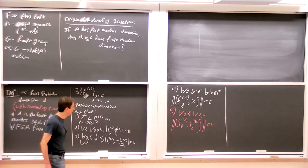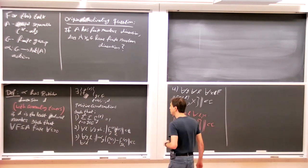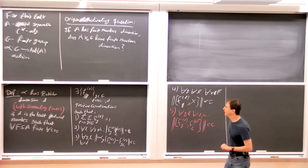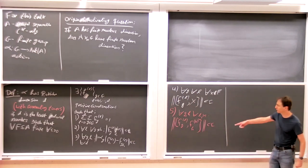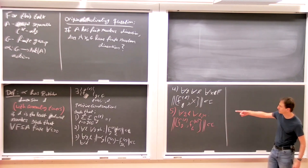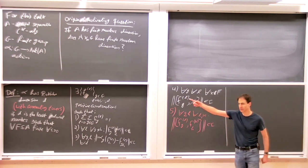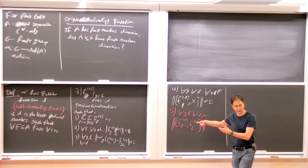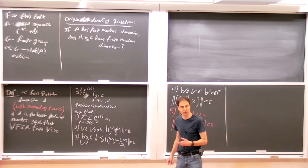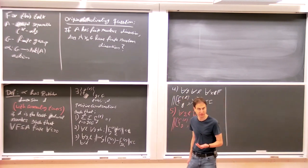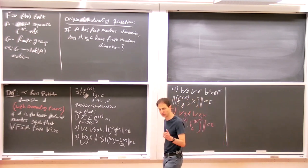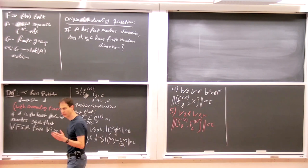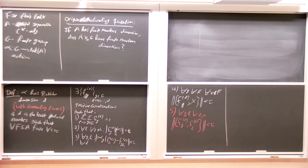We had an example showing those things are different. The main question we want to address is: is Rokhlin dimension, aside from being a tool for permanence properties, actually an interesting invariant for group actions? Are the only possible values 0, 1, 2, and infinity, or does it actually say something more about the group action itself?